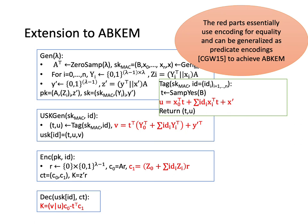We also show that the red parts of our IBE essentially use the encoding for equality and can be generalized as predicate encodings proposed by CGW. In this way, we can generalize our IBE as an ABE. This extension can also be used in the standard world, not only the fine-grained world.